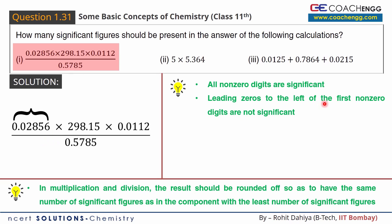Leading zeros to the left of the first non-zero digit are not significant. So the zeros before the first non-zero digit are not counted, whether there is a decimal or not. All those leading zeros are not significant. Therefore, the first term has 4 significant figures.